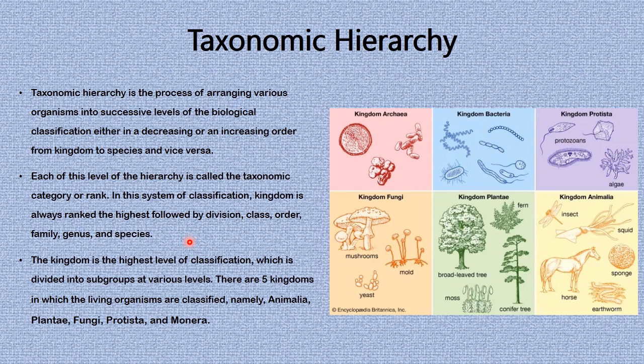In this system of classification, kingdom is always ranked the highest, followed by division, class, order, family, genus, and species. You need to be able to give the particular order, either in ascending or descending order.